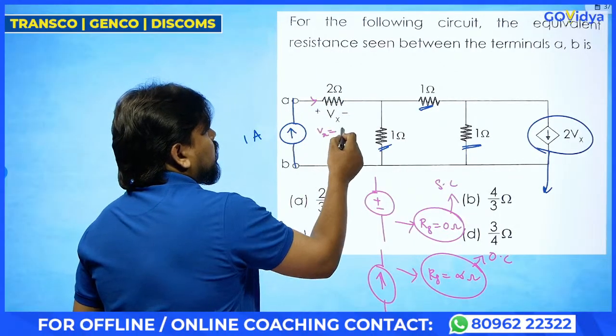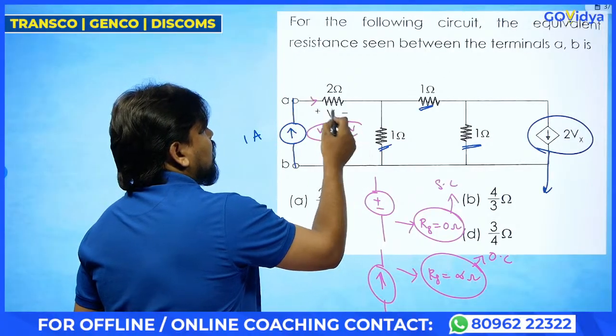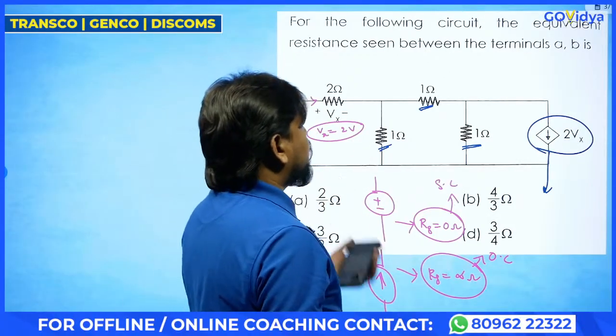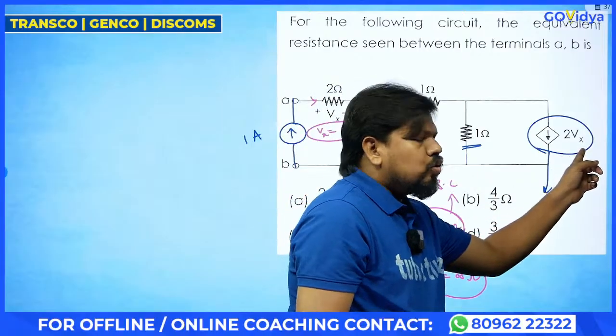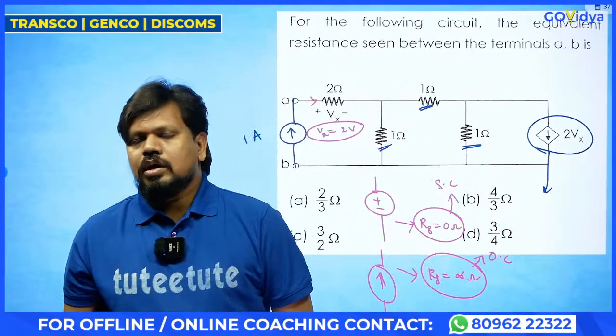1 into 2, so 2 volt. So Vx value you got. So that Vx value if you are getting, so automatically 2 times of Vx value also you are getting.